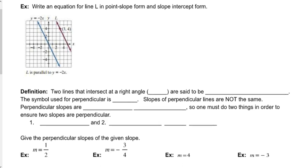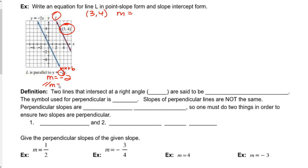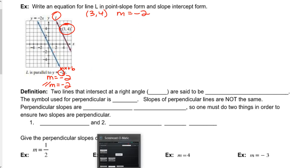Given a graph, we're going to write an equation for line L — the red line — in point-slope form and slope-intercept form. I have the point (3, 4), and L is parallel to the line y = −2x. From y = mx + b, the slope m is −2. If we are parallel to each other, the slopes are exactly the same, so the slope I need is also −2.